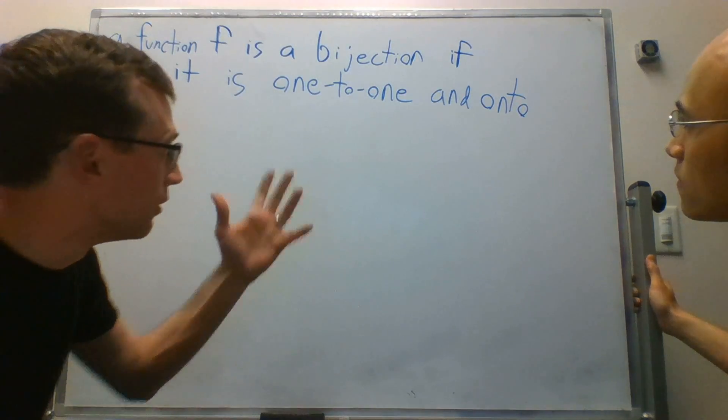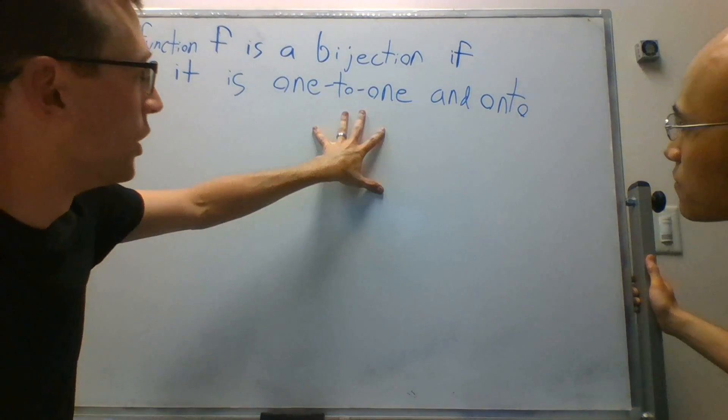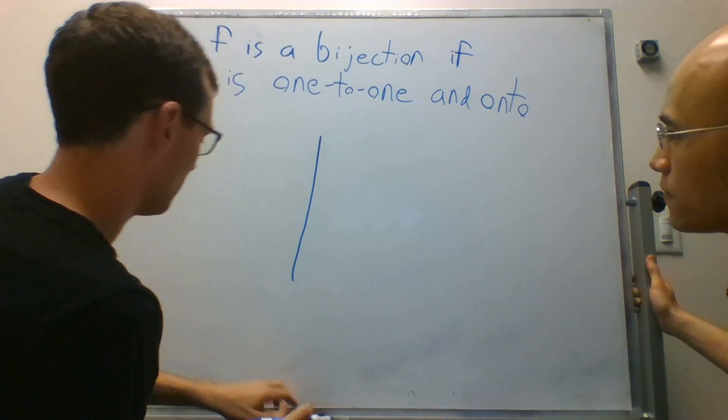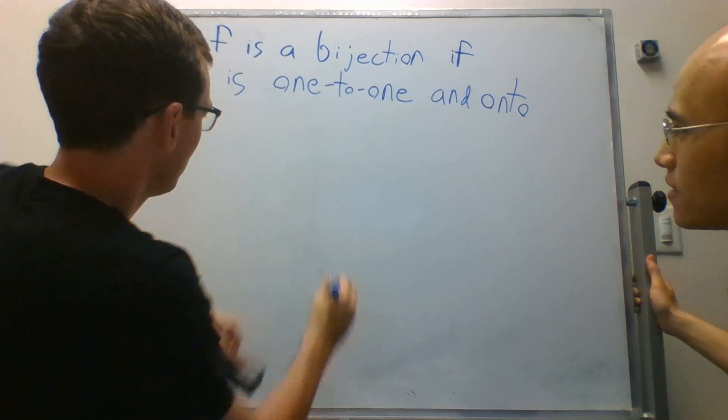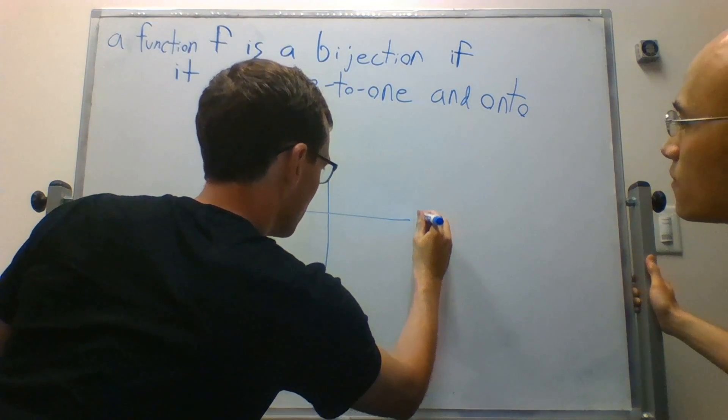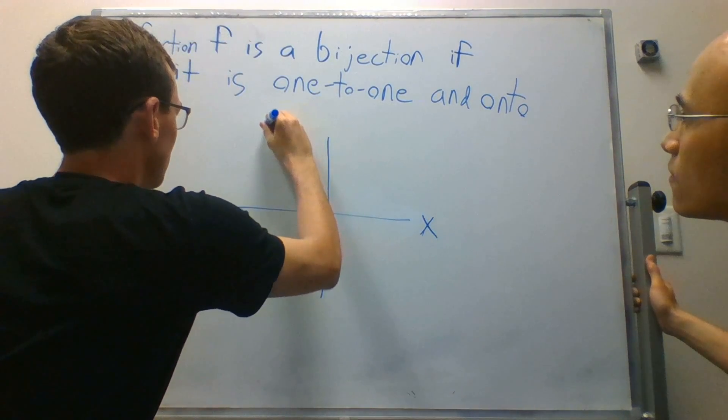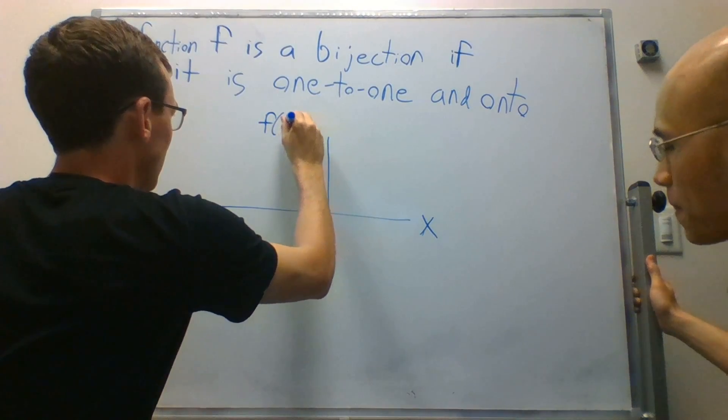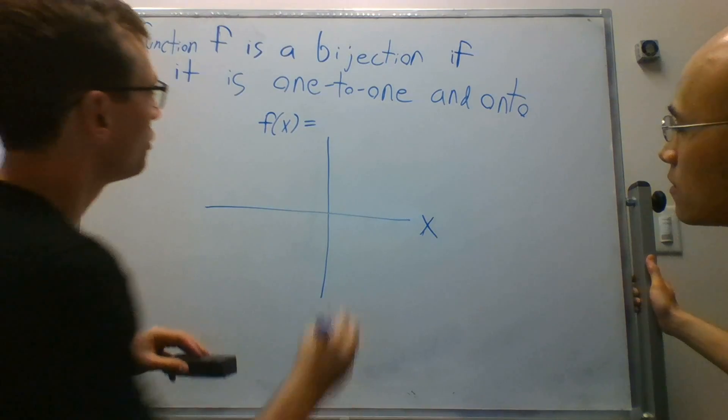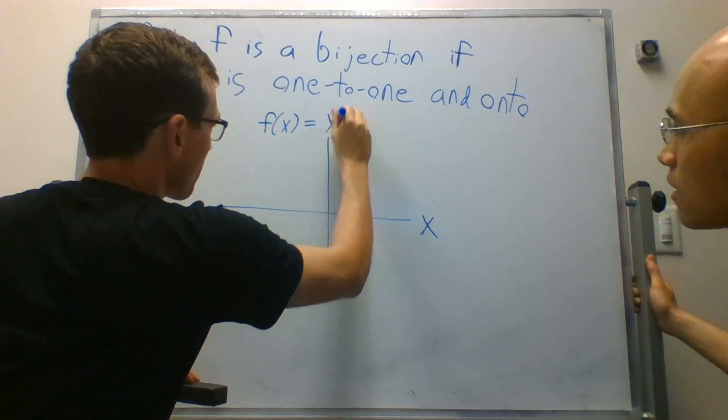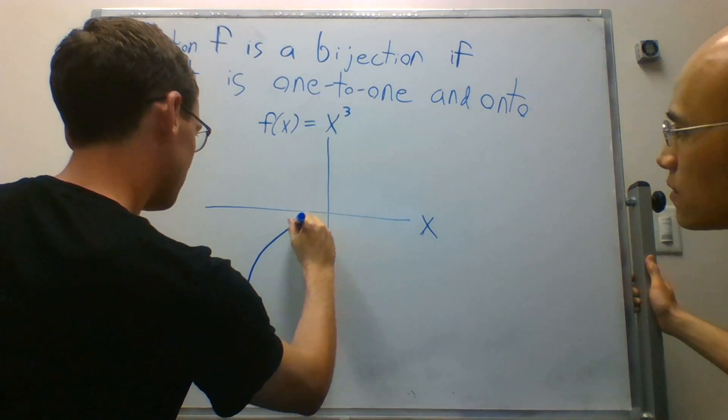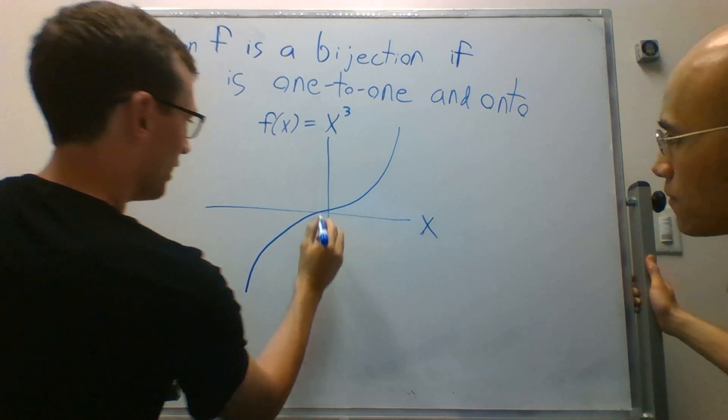Okay, so let's come up with an example of a function that is both one-to-one and onto. So we'll draw a graph here. Oh, that is not straight at all. That's more straight. Okay, so let's say this is x, and let's say this is f of x. And let's define a function that's both one-to-one and onto. So f of x equals x cubed, which is this squiggly line here. So that should be zero.